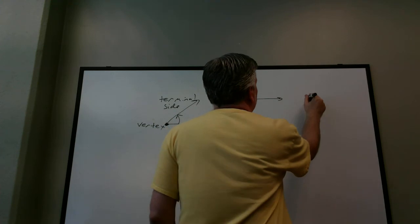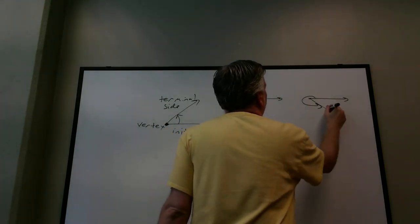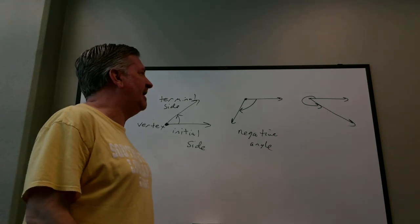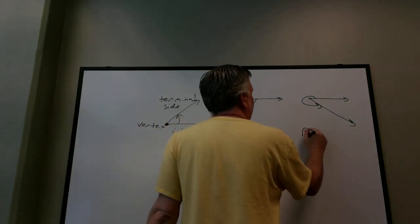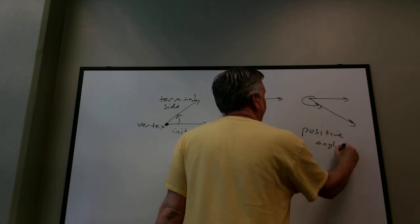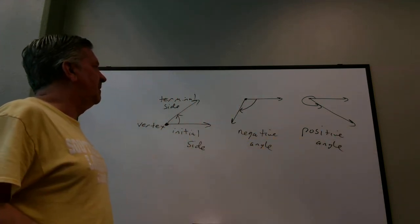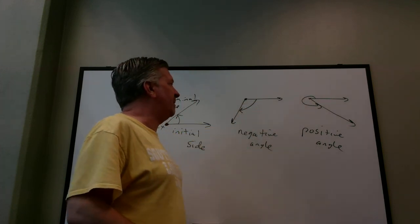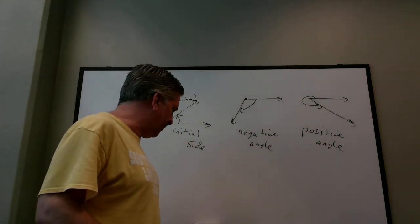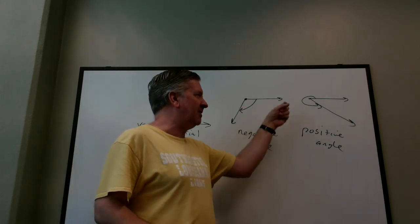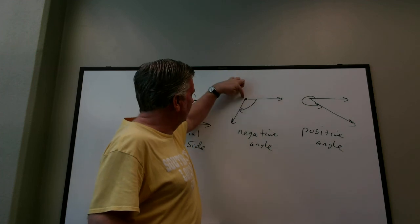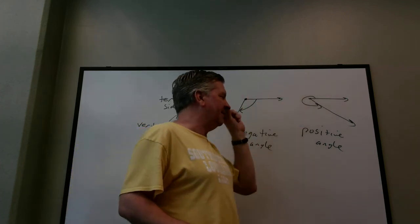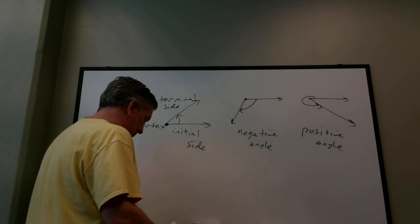Let me draw one more. Initial side here, rotation is counterclockwise, terminal side is there — that's a positive angle. Notice I've drawn the initial side going to the right horizontally in all three examples, because that's generally how we'll do all these angles in this book. If the initial side is running horizontally to the right, up is positive and down is negative. That's only if the initial side is in this direction, which we'll do throughout the course.